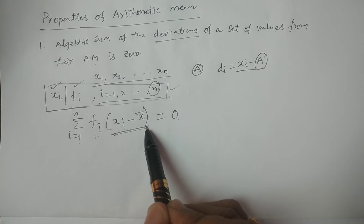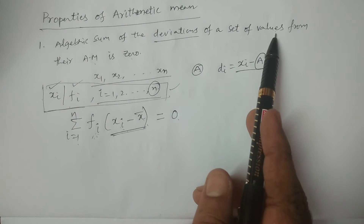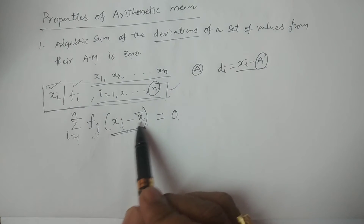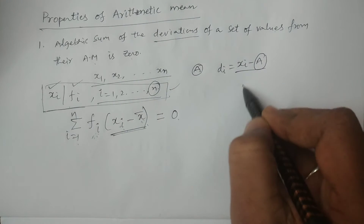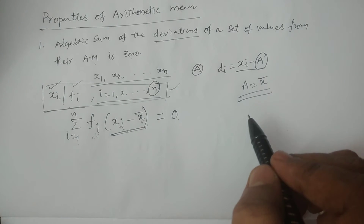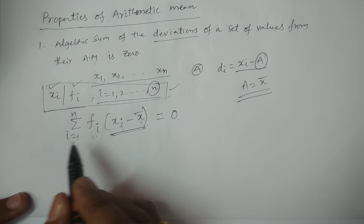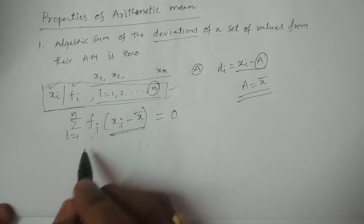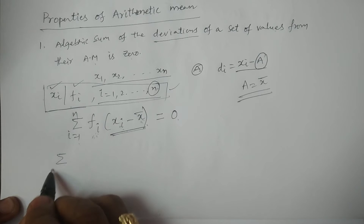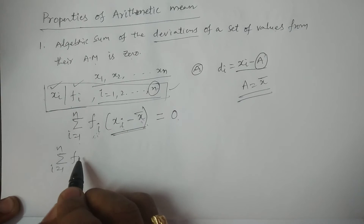Deviations is xi minus x̄ multiplied by fi, of a set of values from their arithmetic mean, where a is equal to x̄. That is what we have to prove. Now coming to the proof, consider summation i is equal to 1 to n, fi into xi minus x̄.